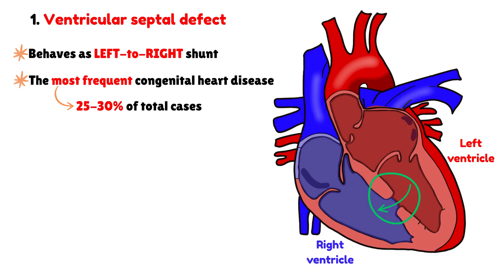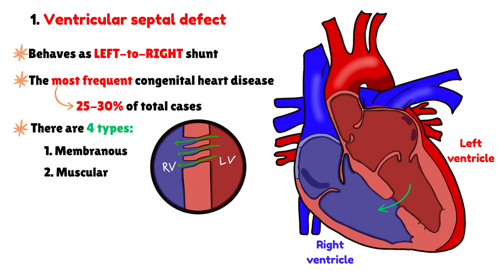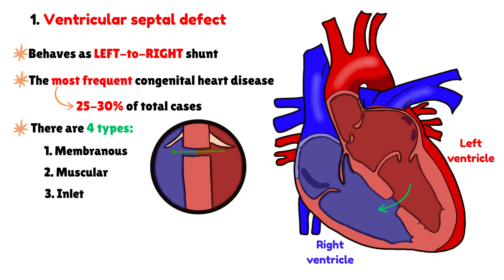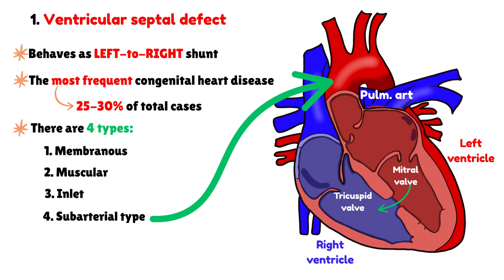There are four different types of ventricular septal defect. The membranous type, which is the most frequent, located in the upper portion of the septum. The muscular type, which can appear as a single or multiple opening, giving the characteristic appearance often described as a Swiss cheese defect. The inlet type, found near the atrioventricular valves, more exactly near the tricuspid and mitral valves. Finally, the subarterial type, which is located near the pulmonary artery and the aorta.